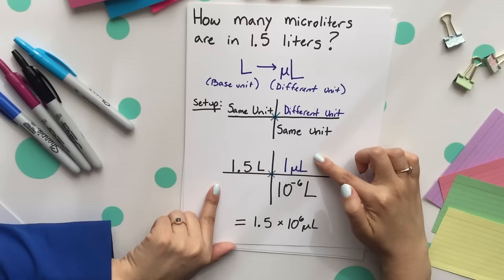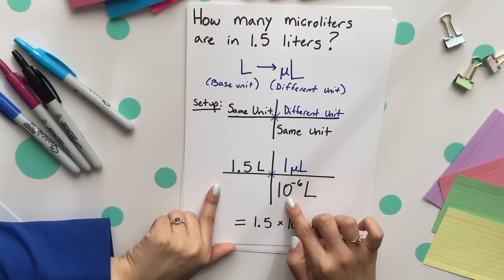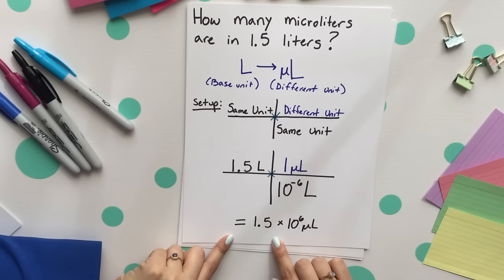Next, you multiply straight across and divide by 10 to the negative 6 which gives you 1.5 times 10 to the 6 microliters.